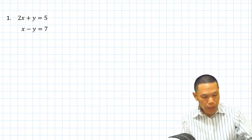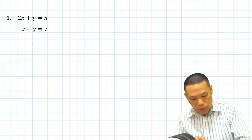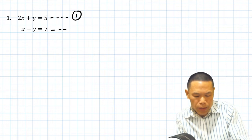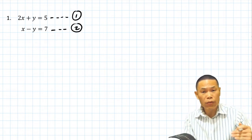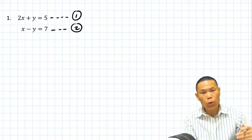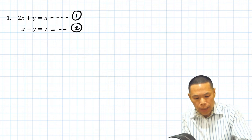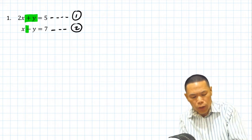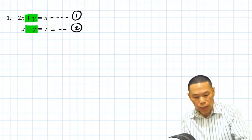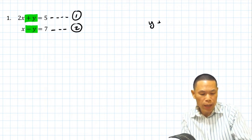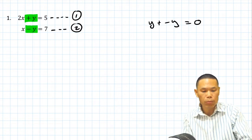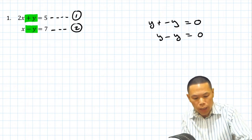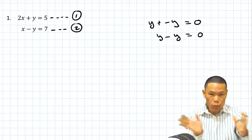First of all, I name this equation number one and this one equation number two. We want to eliminate one of the variables — either x or y. I can see we have a positive y in equation number one and a negative y in equation number two. So if we add them up, y plus minus y equals zero, so we get rid of the y variable.